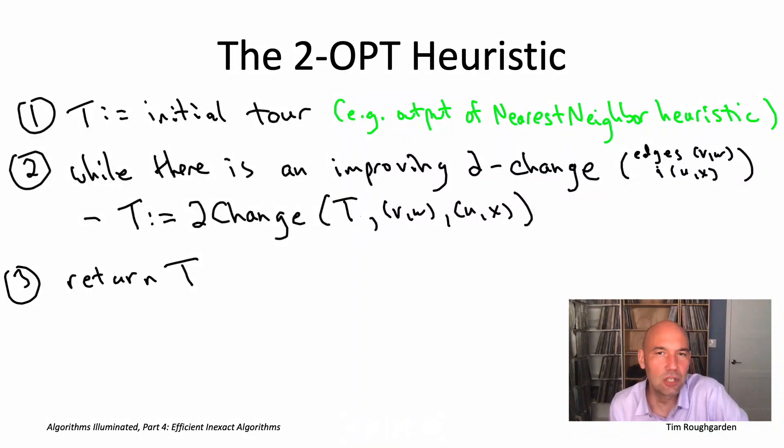So let's see how the two-opt heuristic might work in an example. And let's use the same example that we had in a previous quiz. I'll draw it again here on the slide to jog your memory.